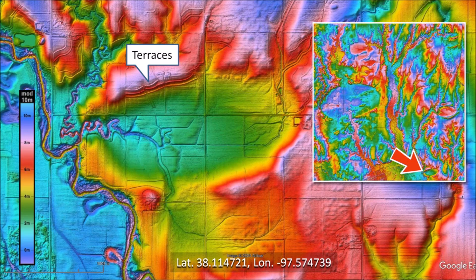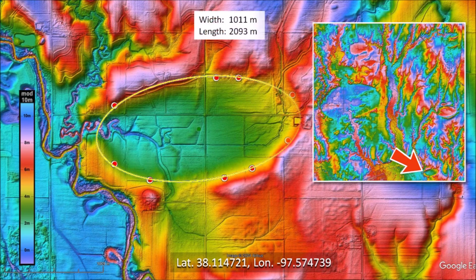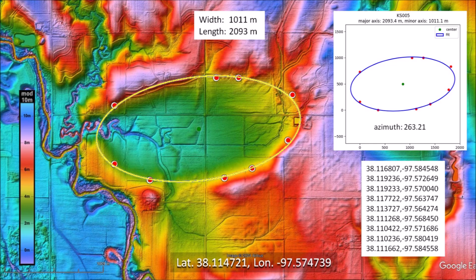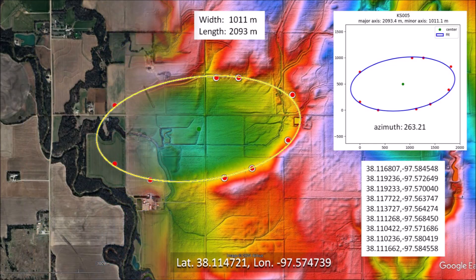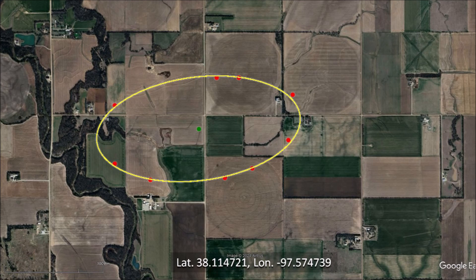The north side of this basin has some man-made terraces for erosion control that have destroyed the rim. There are also four breaks in the rim from water drainage. I selected points along the perimeter of the basin, avoiding the breaks in the rim and the man-made terraces. This basin has a length of 2,093 meters. A satellite image of the same area shows that LiDAR is indispensable for the study of the impact basins — without LiDAR, we would not even know that there is a mile-long basin at this location.